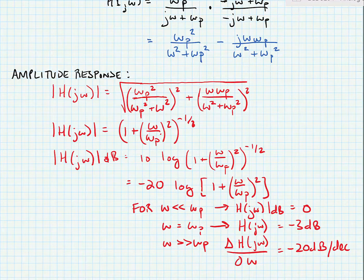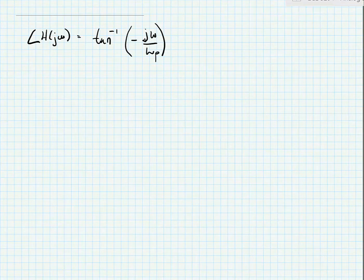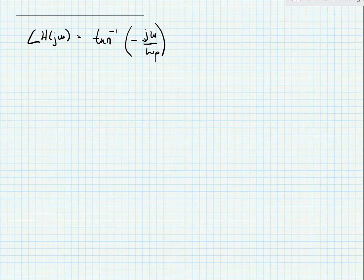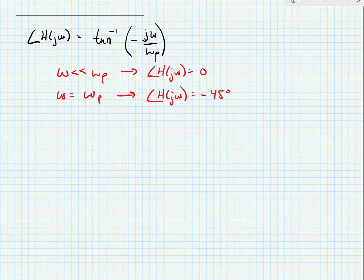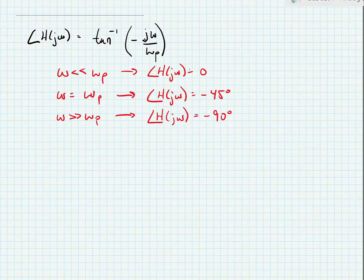Next we're going to calculate the phase response for this transfer function. For the phase response, we simply take the imaginary portion divided by the real portion and take the arc tangent of that. So our phase of H of j omega is equal to the arc tangent of minus j omega divided by omega p. For omega much less than omega p, that would be the arc tangent of a very small number, which is pretty close to 0 degrees. For omega equal to omega p, this would be the arc tangent of negative 1, equal to negative 45 degrees. Finally, for omega much greater than omega p, the arc tangent of a very large number approaches minus 90 degrees. Now we can plot a Bode plot of the frequency response of this amplifier.